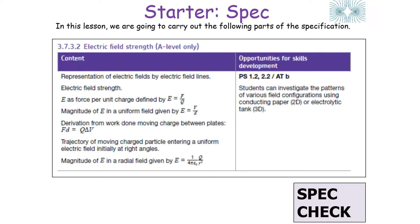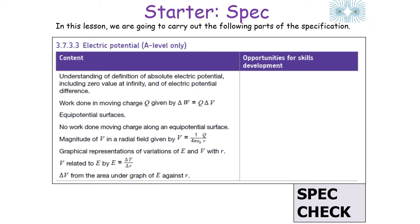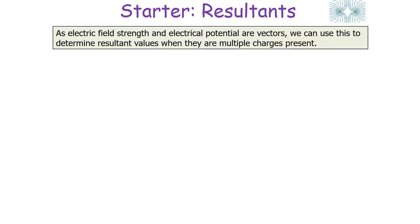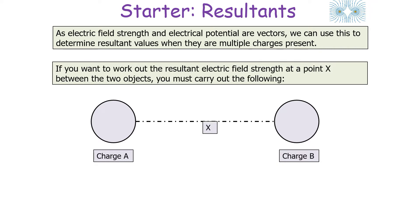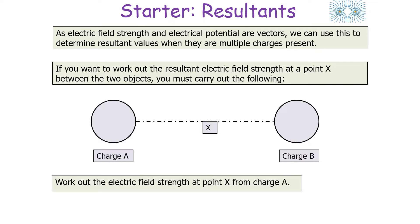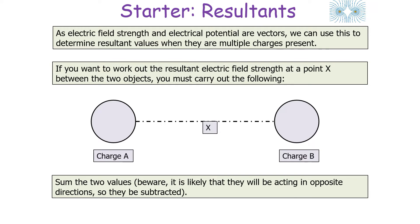In today's lesson we're covering the electrical field strength part of the specification and also the electrical potential part. Because we've got both electrical field strength and electrical potential, we can use their values to determine resultant values when multiple charges are present. This can be easily determined when the two charges are aligned in a straight line. To work out the resultant electrical field strength at point X between two objects, we work out the electrical field strength at point X from charge A and from charge B, then sum the two values.